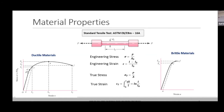If you have done a tensile test, you are aware that there is a necking phenomenon that occurs before the material fails. Necking is basically the result of plastic deformation. Ductile materials give you that warning — the necking is happening, meaning it is about to fail. Ductile materials give you warning because there is a lot of strain going to happen before fracture.